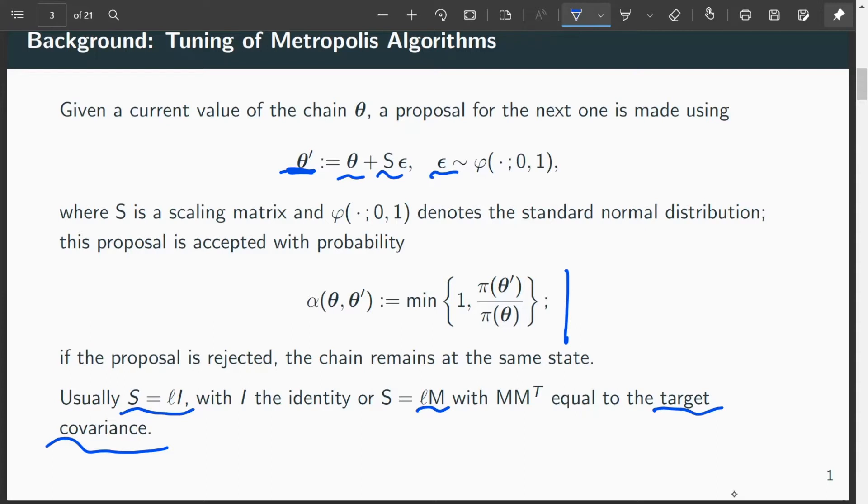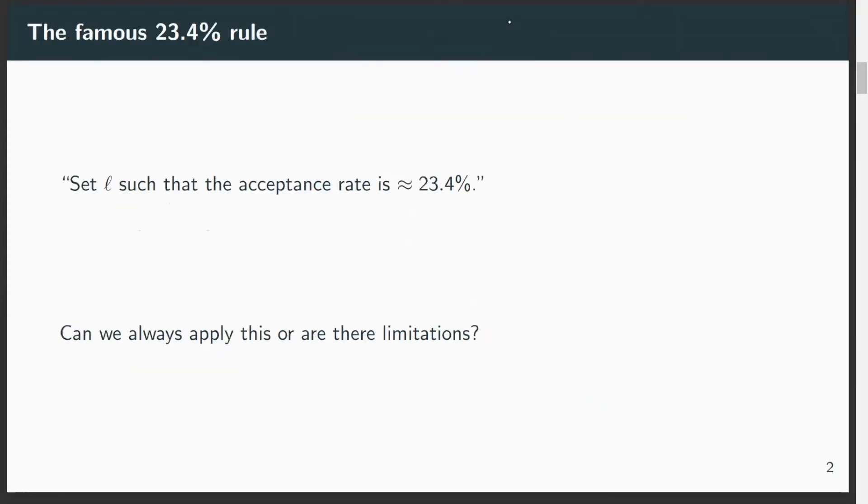But how exactly do we choose this value L? One way of choosing this value is the famous 23.4 percent rule. Briefly, this rule states that you should set your scaling factor such that the acceptance probability of a random walk Metropolis algorithm is around 23.4 percent. Maybe you've heard it as 25 percent, but this is the standard guideline.